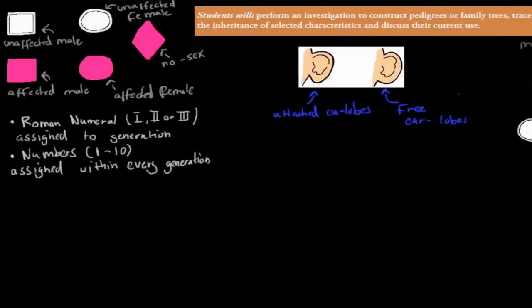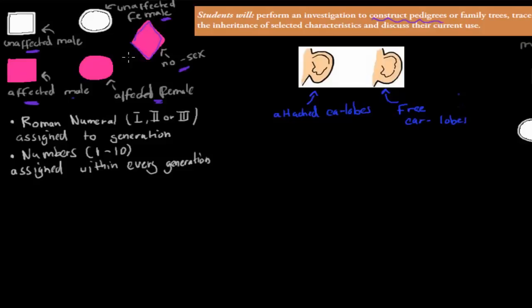First we'll go for the part which is to construct pedigree trees. We should know what to actually draw — there are a couple of different symbols. We have a square symbol which represents an unaffected male. So for example if we're talking about a disease, the white square means that person does not have that disease. A white circle means it's an unaffected female — whatever characteristic we're looking at, this female does not have it. A pink square means the male is affected — he has that trait. A purple circle means it's an affected female. And a diamond shape means there's no known sex — it could be female or male, we just don't know.